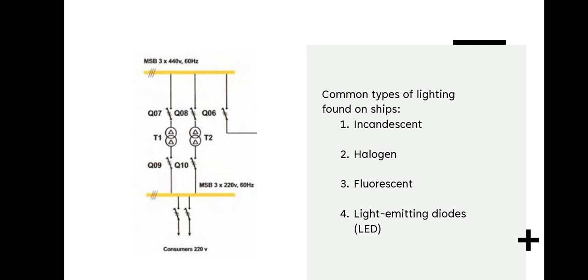For marine engineers to tackle lighting problems, it's important to understand the most common types of lighting found on ships. This includes incandescent, halogen, fluorescent, and light-emitting diodes or LED.